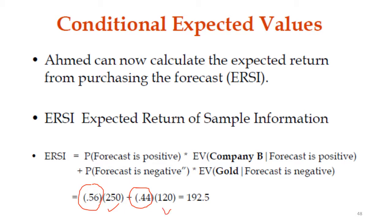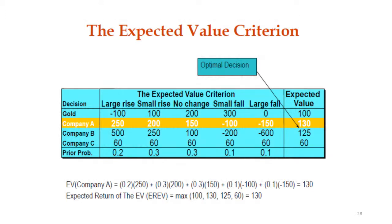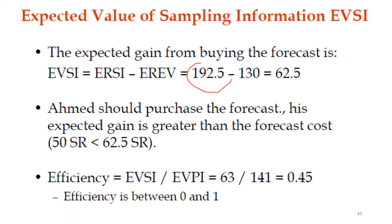ERSI - expected return of the sample information - equals 192.5. In the previous lecture we already computed EREV - expected return of the expected value - which equals 130. Therefore, EVSI = ERSI minus EREV = 192.5 minus 130 = 62.5.